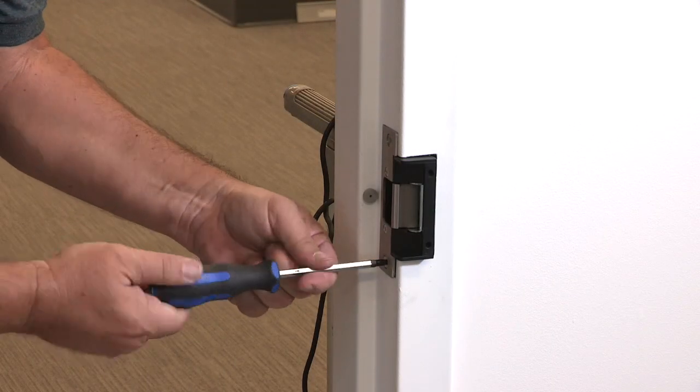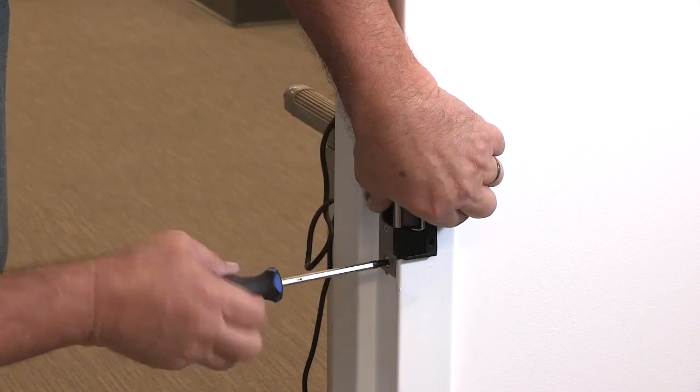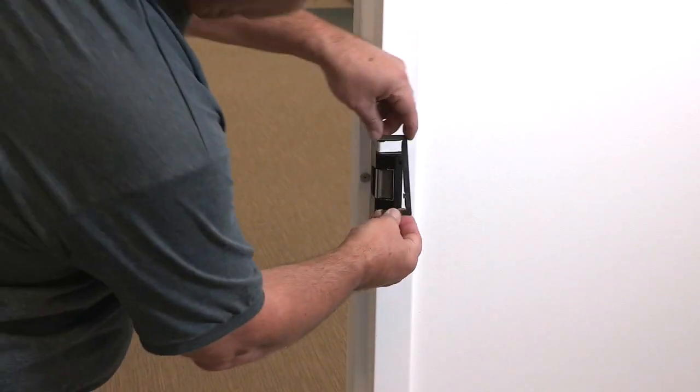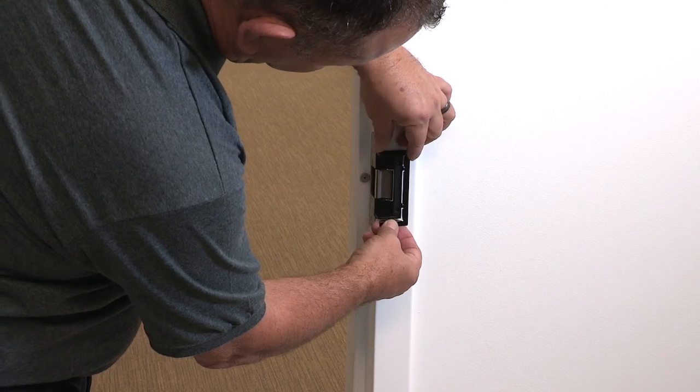We have a nice clean cut in our installation, but you may have a gap in the frame if you're replacing another brand of strike or your cut is too rough. This black trim ring will create a perfect edge around the strike.